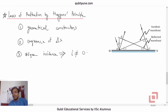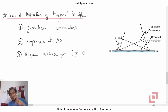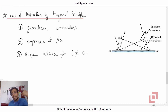We have this plane wavefront AB. The idea is that at the moment where A reaches the reflecting surface MN, the other side of the wavefront — B — has yet to reach the surface. During that time, point A acts as a secondary source and sends a wavelet in the same medium.